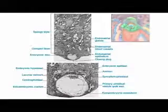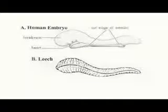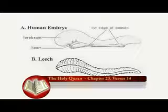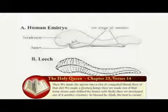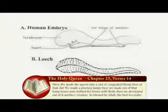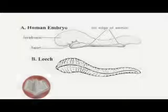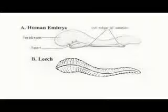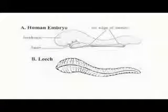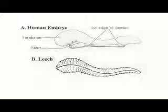Next is Alaka — Surah Al-Mu'minun, Ayah 14: 'Then we created the drop into a leech-like structure. Then of that leech-like structure, we made a chewed-like substance.' Alaka refers to a leech-like appearance, especially at about 22 days, as shown in this slide. This is a leech, and this is the human embryo at about 23 days.